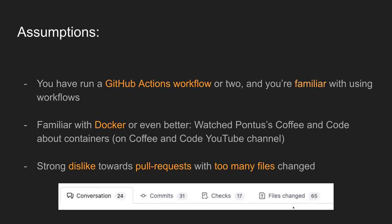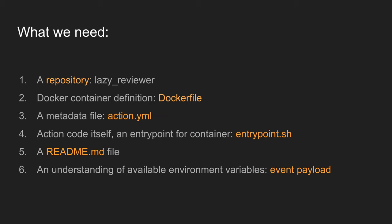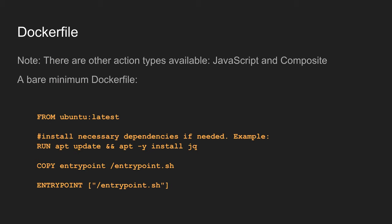This was my motivation for this presentation. I made a pull request with 65 files changed and I wanted a warning — not just for myself, but for future code I'm going to review. So the example is: build a GitHub action that checks the pull request and warns the user if more than X files are touched. For this I need a repository called 'lazy reviewer', a Dockerfile, action metadata in action.yaml, action code as an entry point shell script, a readme, and an understanding of available environment variables and the event payload GitHub provides.